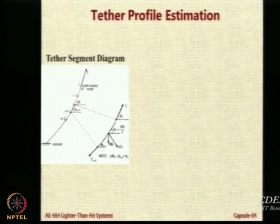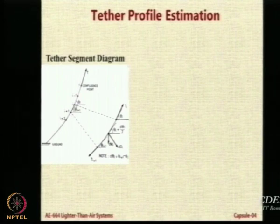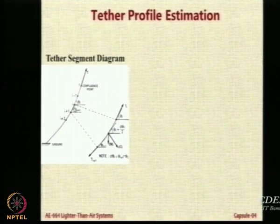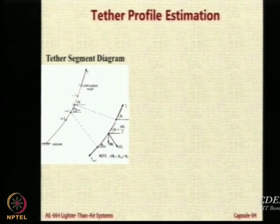Now let us take any segment — this is i minus 1, this is i, this is i plus 1. Let us look at this ith and i plus 1 segment. This is one segment of the tether. What are the forces acting on the tether? One is the self weight, the other is the aerodynamic load acting on it because it is a cylinder at an angle to flow.